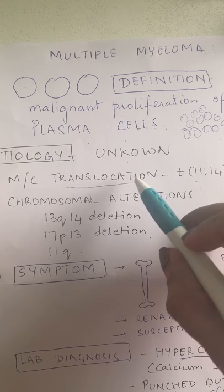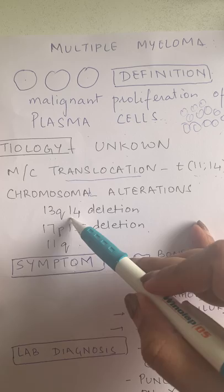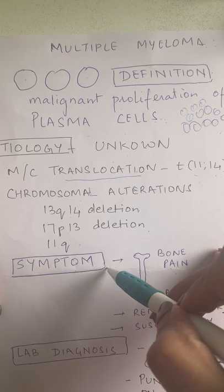The etiology is unknown, but the most common translocation that we can see is T(11;14) q13;q32 — that can be a part of your multiple choice question as well. The other chromosomal alterations that can be seen are 13q14 deletion, 17p13 deletion, and 11q.